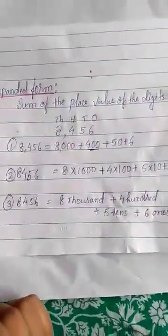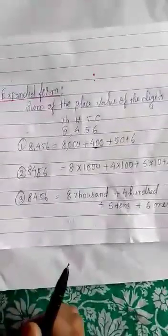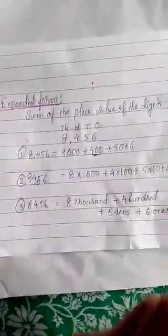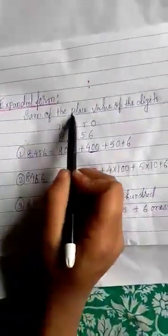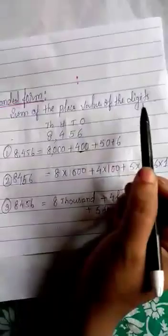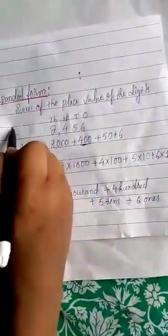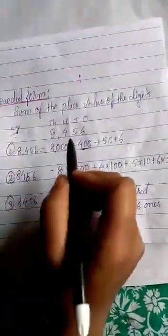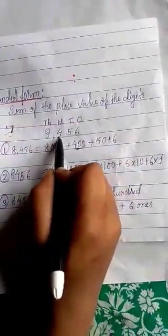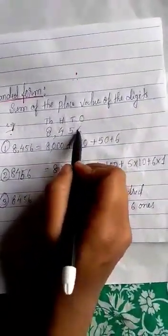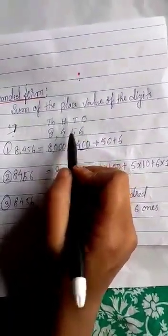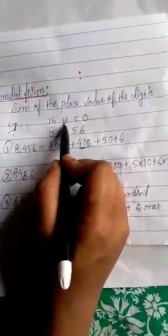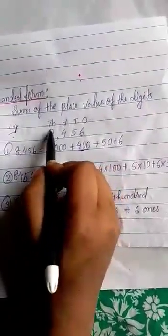Expanded form means we have to expand it in a larger way. Expanded form is actually the sum of the place values of the digits. For example, take 8456 — if you place it in the Indian place value chart, 6 is in ones place, 5 is in tens place, 4 is in hundreds place, and 8 is in thousands place.